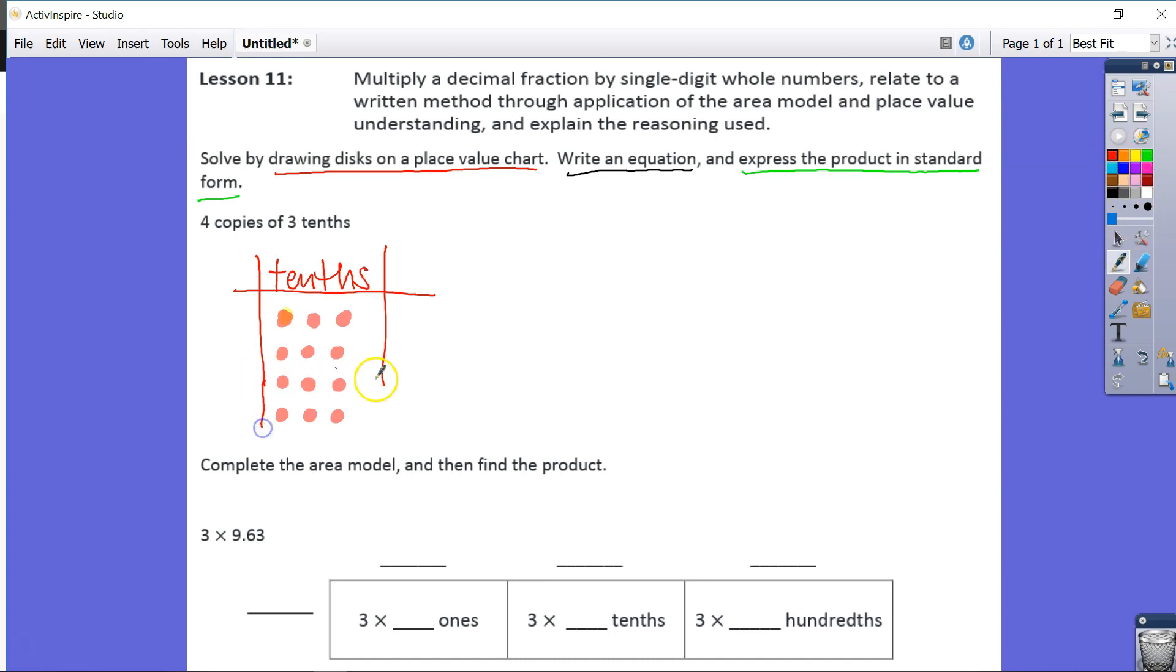Now, if you notice here, we have 3, 6, 9, 12 tenths, and we said that each place value unit, our tenths is one of those place value units, can only hold one digit, 0 through 9.